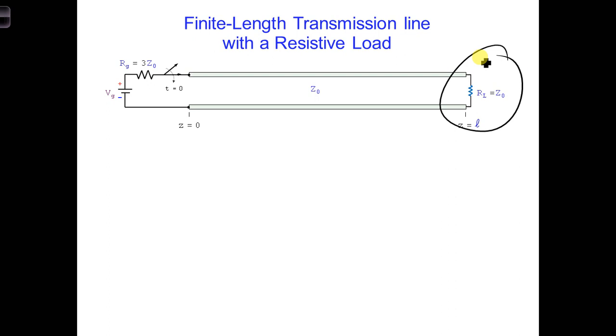What do you think will happen to the voltage and the current waves flowing from a generator and down a transmission line once they reach the end of the transmission line?